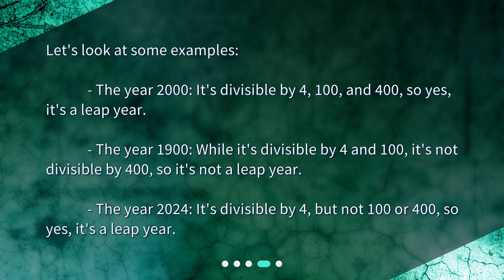The year 1900: while it's divisible by 4 and 100, it's not divisible by 400, so it's not a leap year. The year 2024: it's divisible by 4, but not 100 or 400, so yes, it's a leap year.